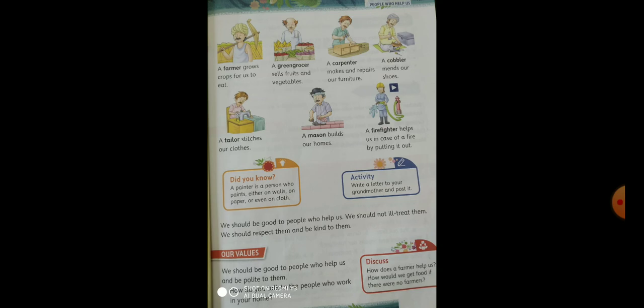A firefighter helps us in case of a fire by putting it out. If there is a fire somewhere, we call the firefighter and he puts out the fire. Can you see in this picture? There is a long pipe and he is spraying water. A painter is a person who paints either our walls or paper. He paints on walls, paper, or even on cloth. These are the people who help us.